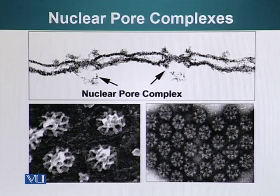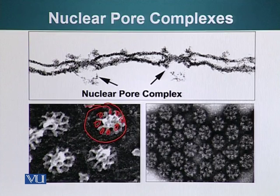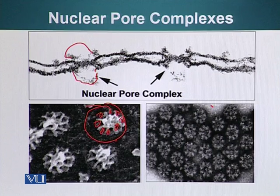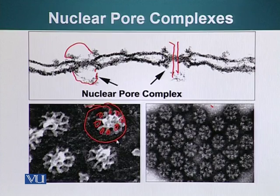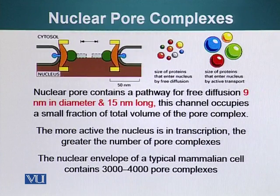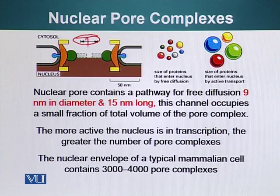Looking at the micrograph, you can see the octagonal symmetry of the nucleoporins making the nuclear pore — there are about eight subunits arranged in octagonal symmetry. This cross-section of the nuclear pore looks similar to the schematic shown earlier. The nuclear pore contains a pathway for free diffusion that is nine nanometers in diameter and about 15 nanometers long, as seen in this diagram.